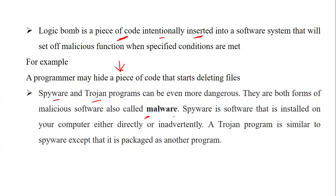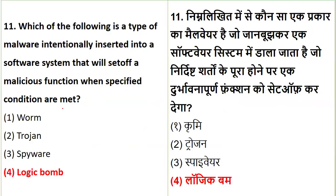We are going to do a dedicated session on computer viruses and malicious software, where we will study them in detail. A computer virus itself is malicious software, also called malware. Worms are a kind of copycat — they can spread to many computers connected in a network. Antivirus software or a firewall is needed to protect your system from worms. They are essentially a family of computer viruses.